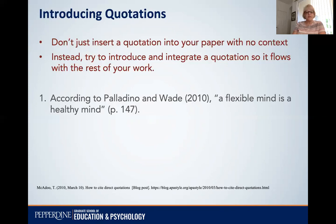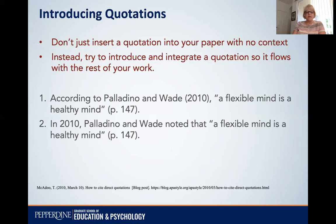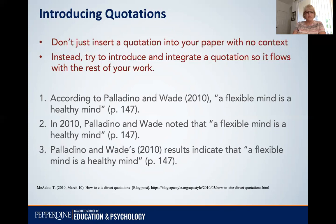Here are some examples. This came from the APA staff who wrote a blog post about how to integrate quotations, and here are three examples. Number one: According to Palladino and Wade, 'a flexible mind is a healthy mind.' Number two: In 2010, Palladino and Wade noted that 'a flexible mind is a healthy mind.' Number three: Palladino and Wade's 2010 results indicate that 'a flexible mind is a healthy mind.' So exact same wording in each one — notice the page numbers, which we have to include for quotations — and each one is integrated into the sentence in a very smooth flow.